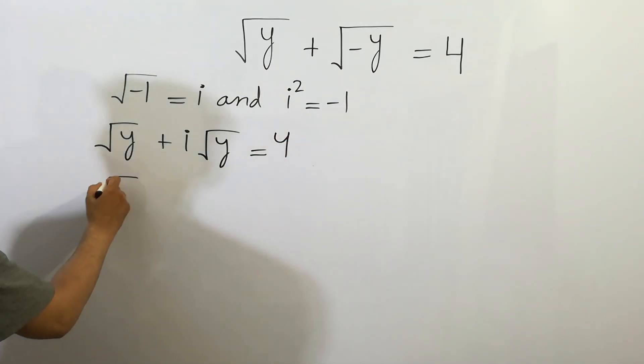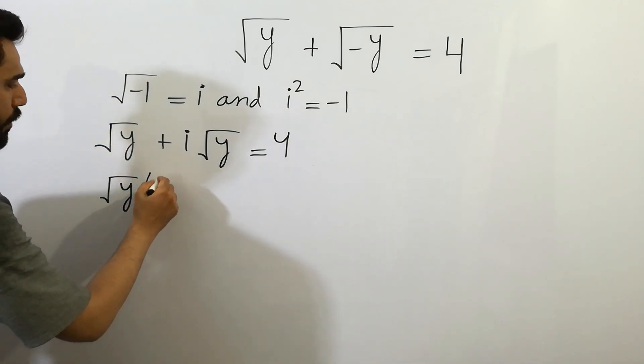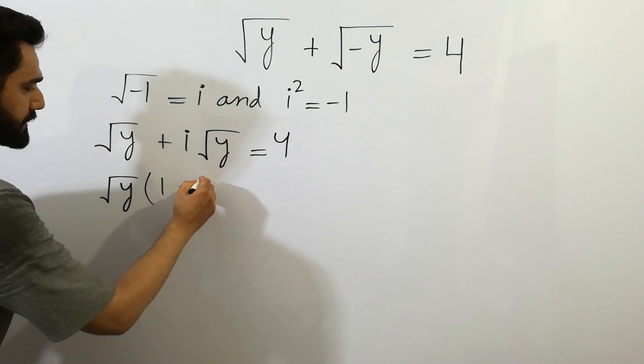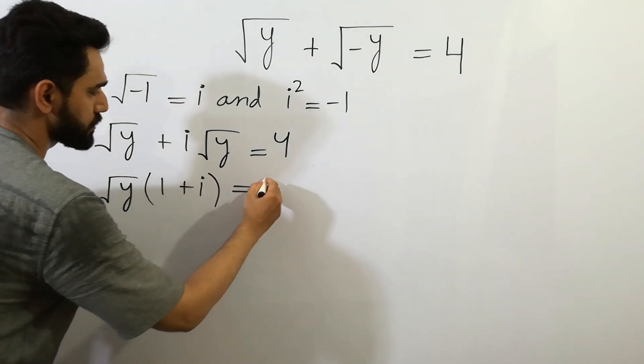Here we can factor out the square root of y, we get 1 plus i is equal to 4.